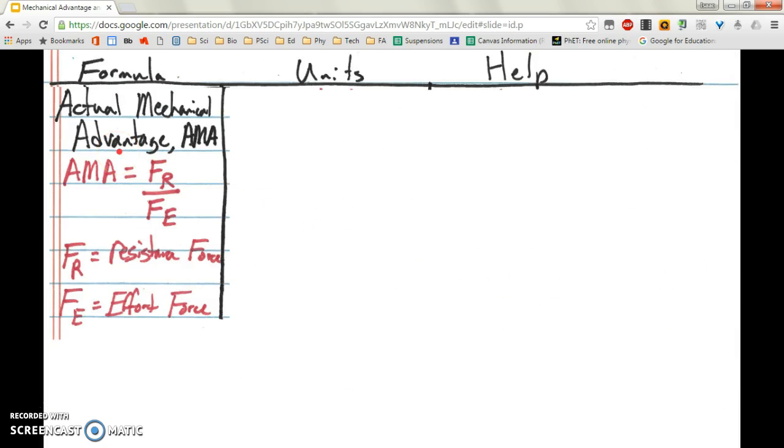All right, actual mechanical advantage. We have AMA is FR, force of resistance, over the force of effort, where FR is that resistance force, and FE is the effort force. Our units, we have newtons divided by newtons, once again.